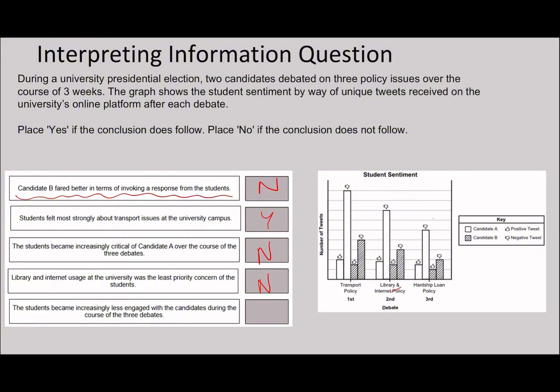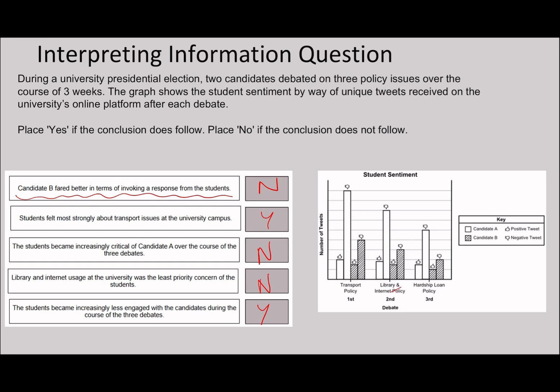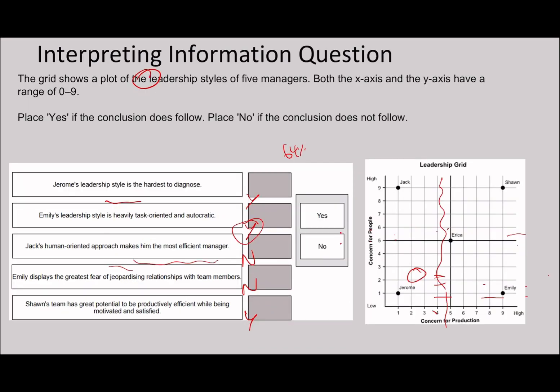Students became increasingly less engaged with candidates during the course of the three debates. I would say that's probably going to be true because like we said, there was a downward trend for both sets. So a little bit more of a straightforward question, but the important point I want to illustrate here is you don't necessarily have to take the time to do every single tiny little calculation. This is very definitely eyeballable, and that's a very important thing to understand.